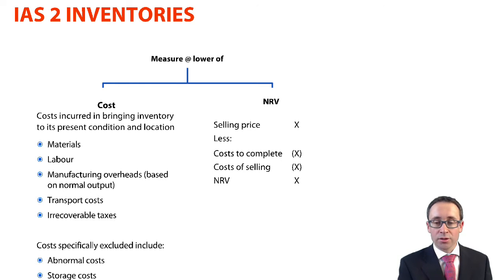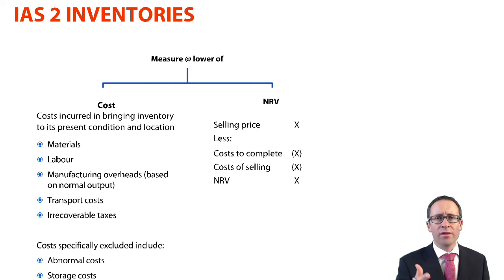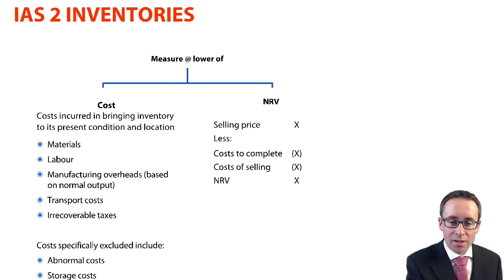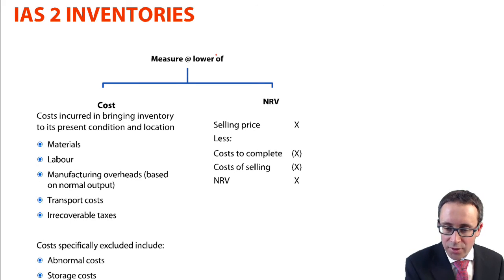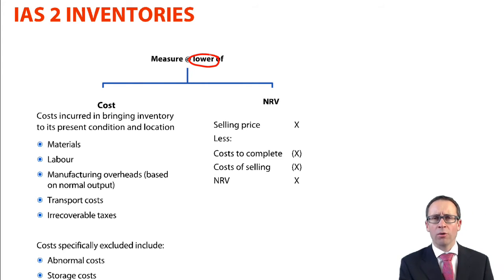When we're talking about prudence, we don't want to value the inventory too high. If we identify that there is a fall in the value of inventory, we recognise that fall immediately. It's therefore that we value the inventory at the lower of cost and the net realisable value — hopefully you can remember that from the certificate level.